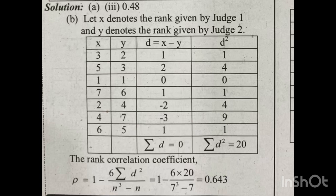The rank correlation coefficient equation is: rho equals 1 minus 6 times sigma d-squared divided by n-cubed minus n. Substituting: 1 minus 6 times 20 divided by 7-cubed minus 7. Seven cubed equals 343, so 343 minus 7 equals 336. The answer is rho equals 0.643.